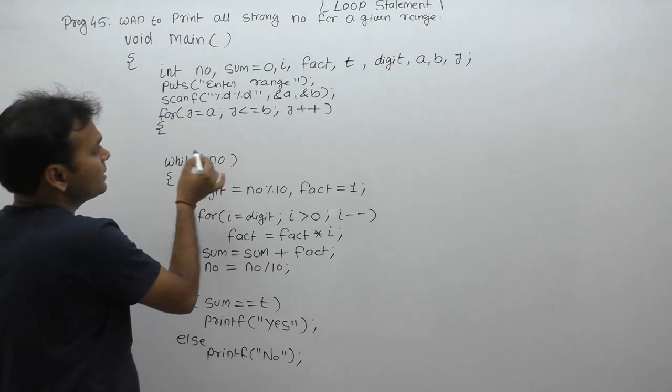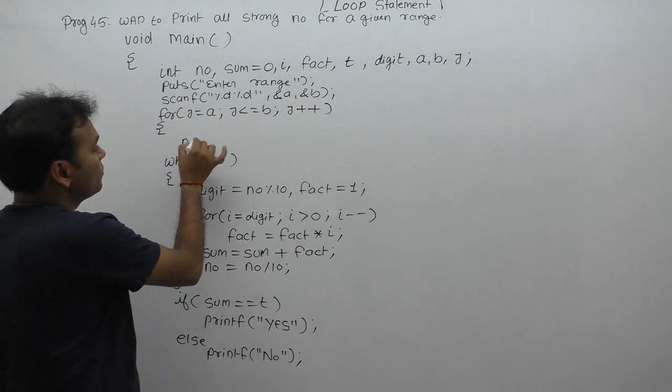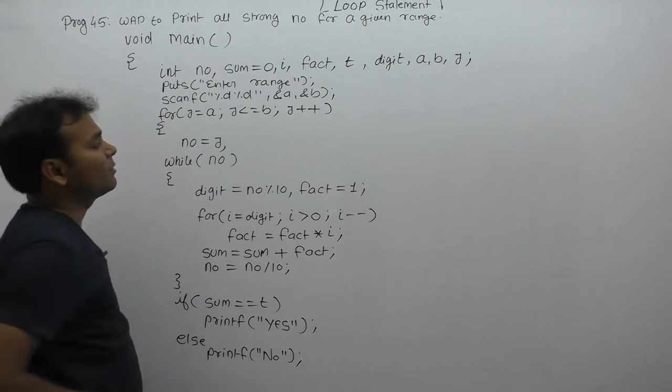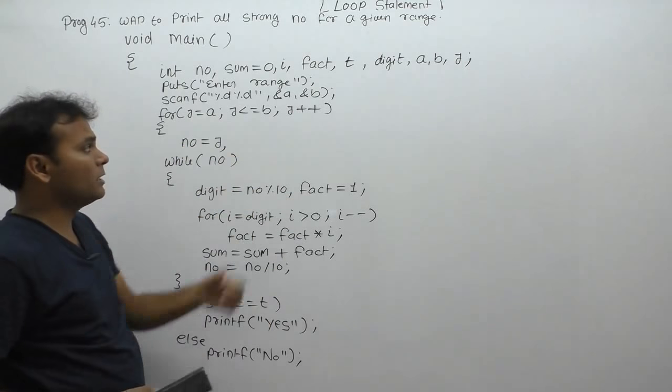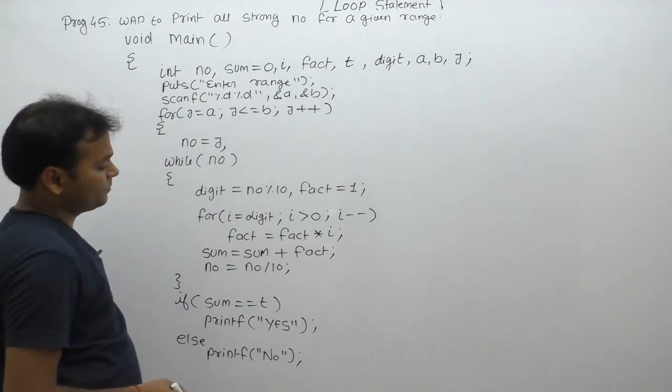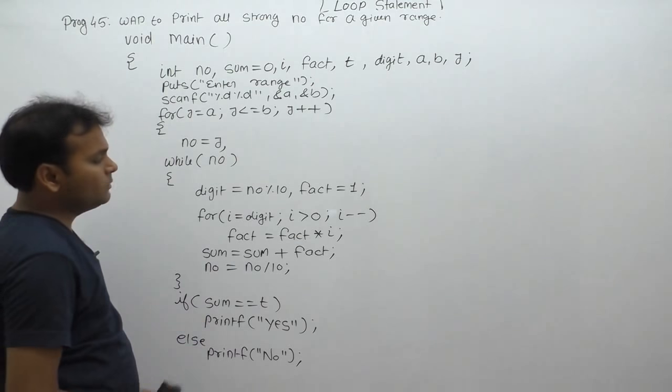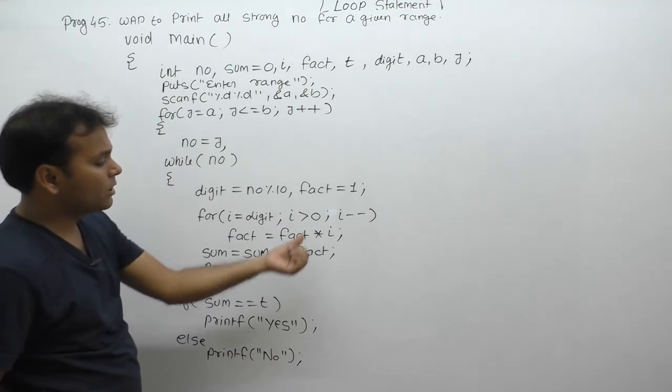The number equals the value of j. We need to manage correctly that every time the number being tested is the current value of j. One more thing in this case: we use a temporary variable t in some places.